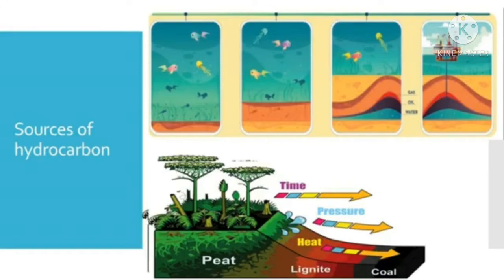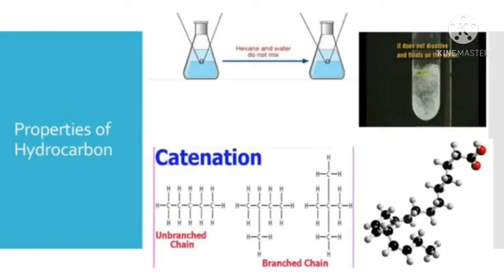Hydrocarbons are present in different trees and plants also. Among all the chemical compounds, hydrocarbons have some unique properties. Most of the hydrocarbons are insoluble in water. Hydrocarbons are less dense than water, so they float on top of water. Most hydrocarbons react with oxygen to produce carbon dioxide and water. Hydrocarbons can be gases — for example, methane and propane. Hydrocarbons can be liquids — for example, hexane and benzene. Or waxes — for example, paraffin.